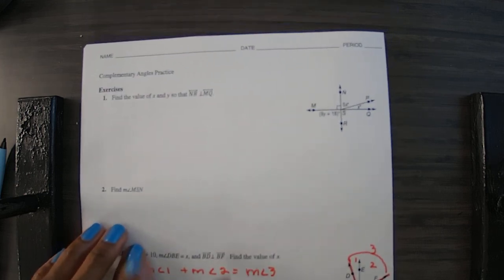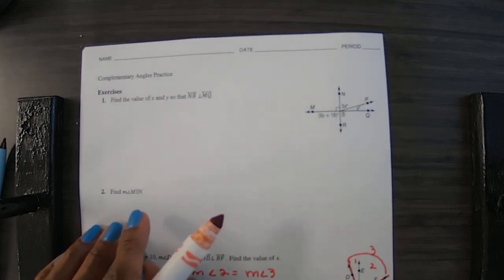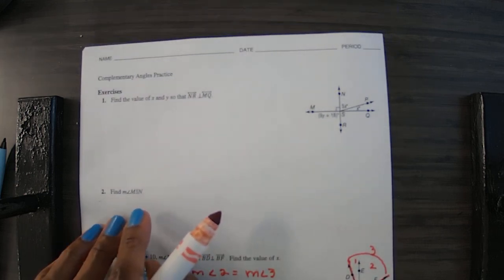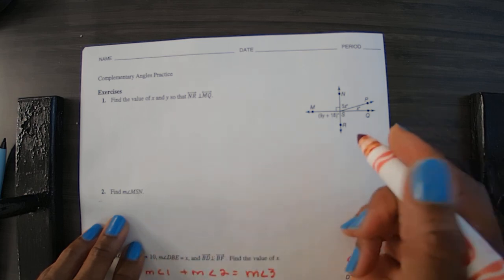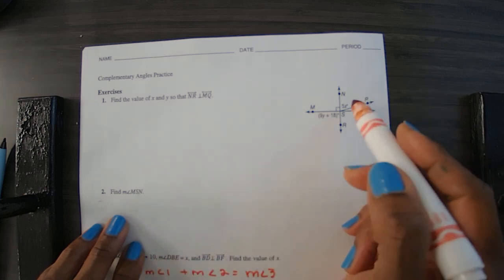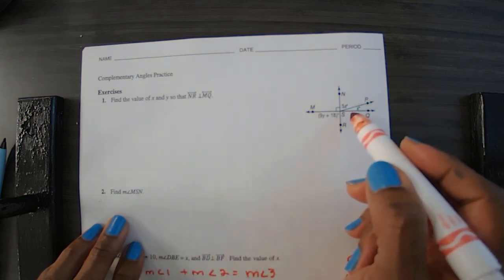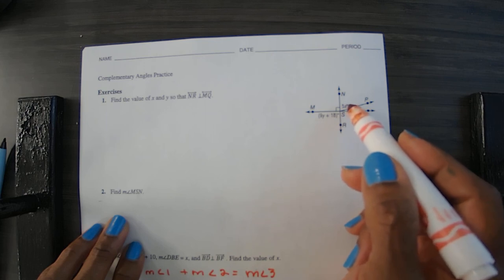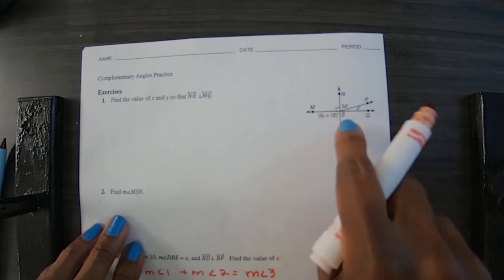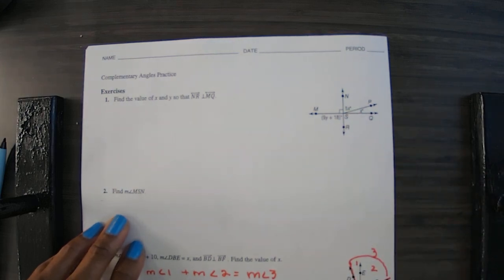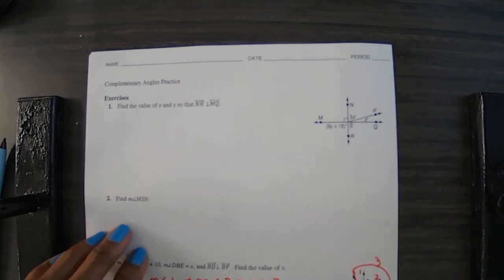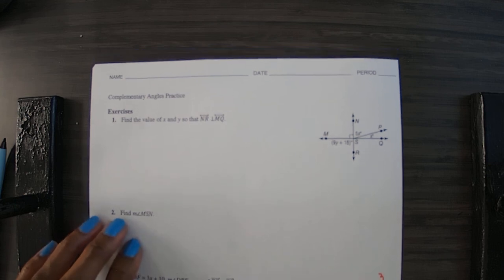On number 2, it says find the measure of angle MSN. It has that little box there, so you automatically know that it is 90 degrees.